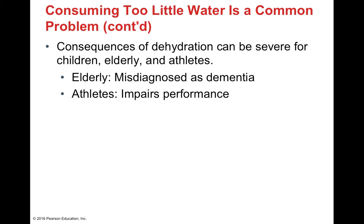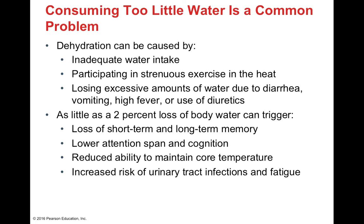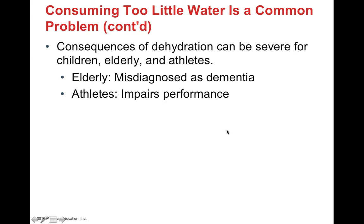The consequences of dehydration can be very severe, particularly for the very young, the very old, and athletes. For the elderly, dehydration is especially concerning because they already tend to suffer from dementia more than younger adults. Because dehydration can cause lower attention span and loss of short-term memory, it is oftentimes misdiagnosed as early dementia when the simple solution is just an extra glass of water. In athletes, dehydration can cause severe impairment of performance.